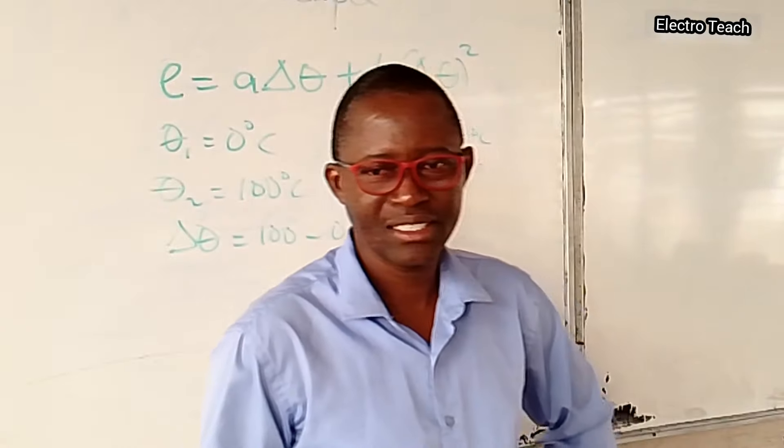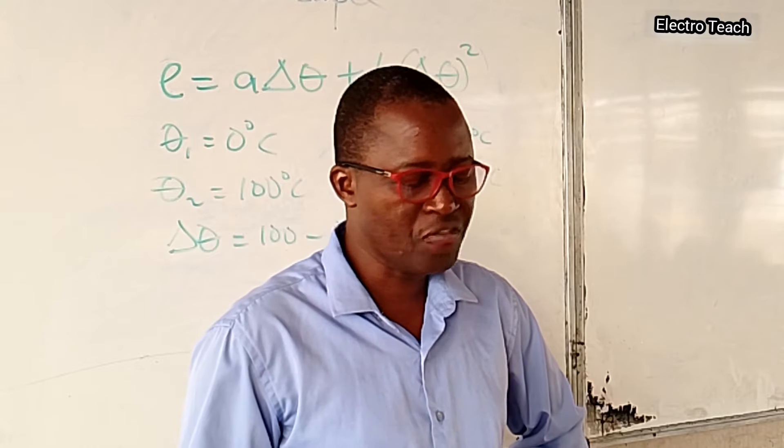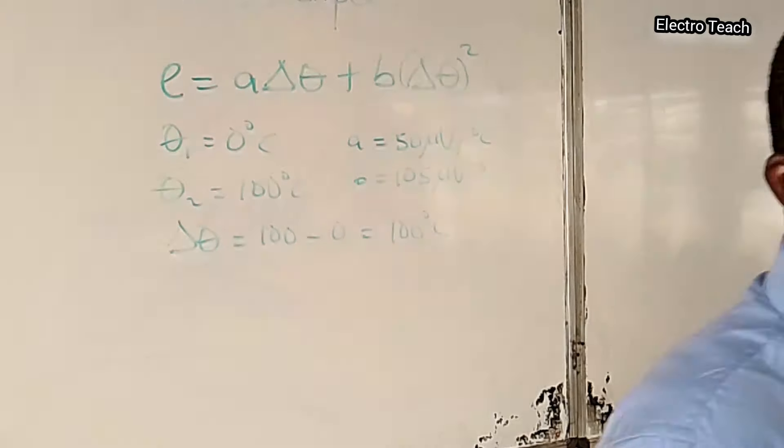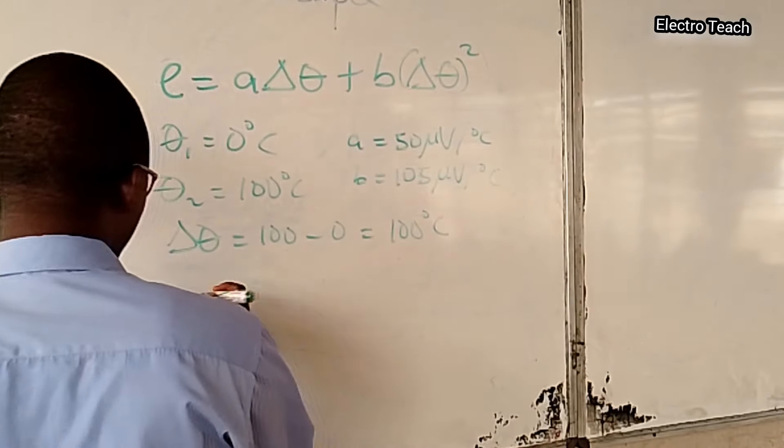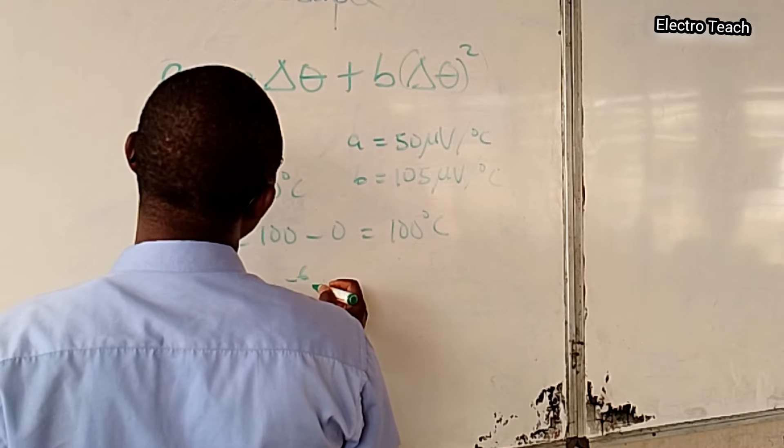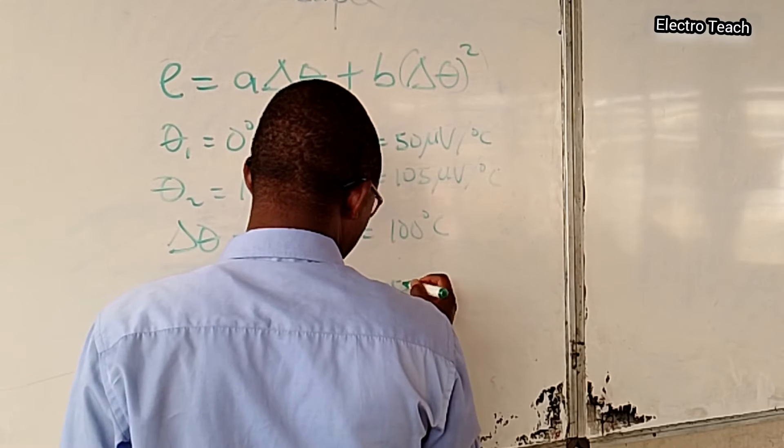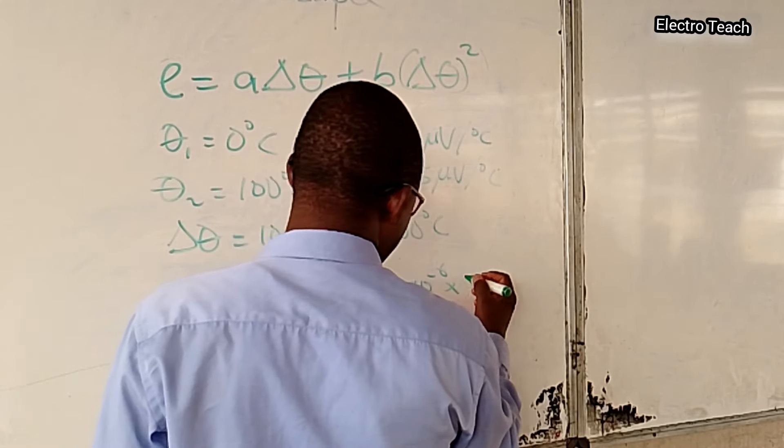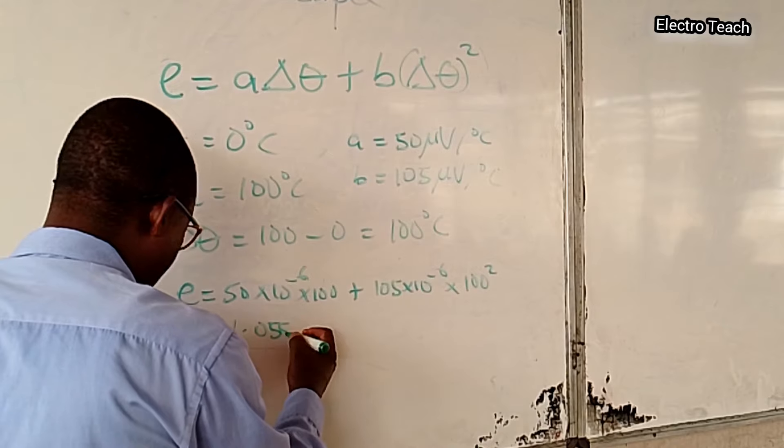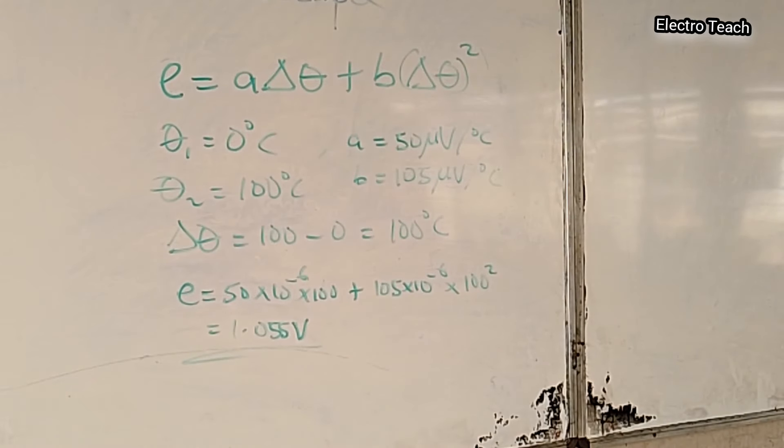What's the answer? 3.5 millivolts? Wrong. 1.05 what? If you are able to get to 1.055, you are right. That's the correct answer. This is what we are saying. E equals 50 times 10 to the minus 6 times 100 plus 105 times 10 to the minus 6, don't forget it's microvolts, times 100 squared. So if you work your calculator, you will get 1.055 volts. That is the correct answer. So that is the first example.